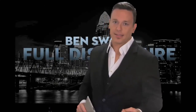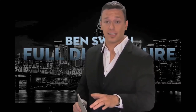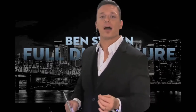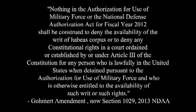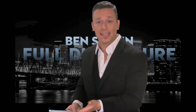It is called the Gohmert Amendment — Section 1029 in the 2013 version of the NDAA, written by Texas Congressman Louie Gohmert. It's supposed to protect the rights of US citizens if they are arrested and suspected of terrorism, protecting their right of habeas. Here's how Section 1029 actually reads: 'Nothing in the authorization for use of military force or the National Defense Authorization Act for fiscal year 2012 shall be construed to deny the availability of the right of habeas corpus or to deny any constitutional rights in a court ordained or established by or under Article III of the Constitution for any person who was lawfully in the United States when detained, pursuant to the authorization for use of military force, and who was otherwise entitled to the availability of such right or rights.'